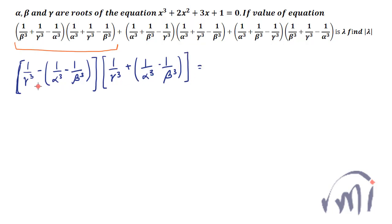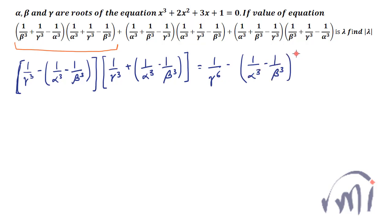Now we can use the formula (a − b)(a + b). So this can be written as 1/γ⁶ − (1/α³ − 1/β³)², which expands to 1/γ⁶ − 1/α⁶ − 1/β⁶ plus a cross term.